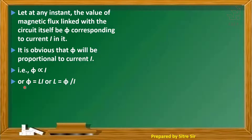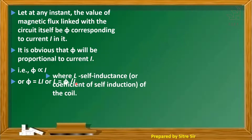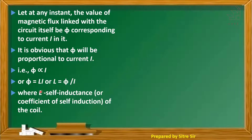Phi is equal to L into I, where L is the proportionality constant. L is equal to phi by I, where L is the self-inductance or coefficient of self-induction of the coil.